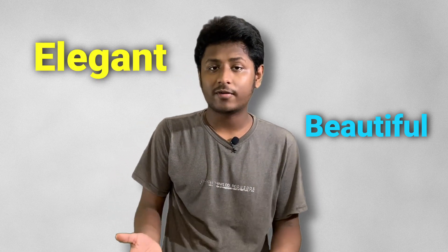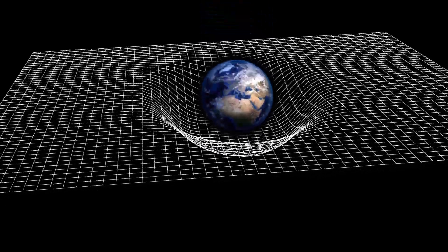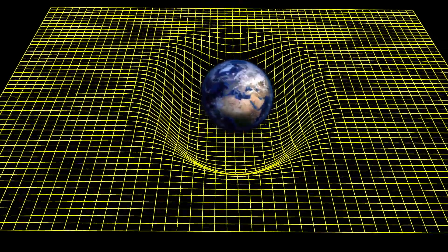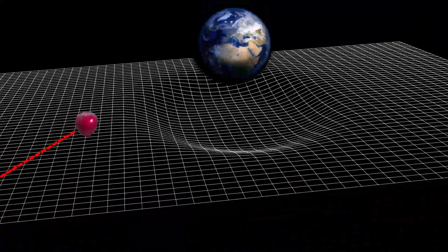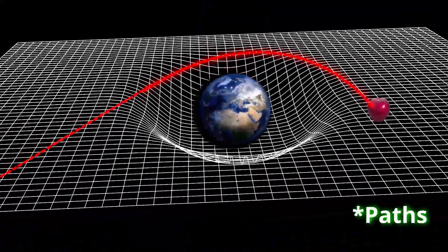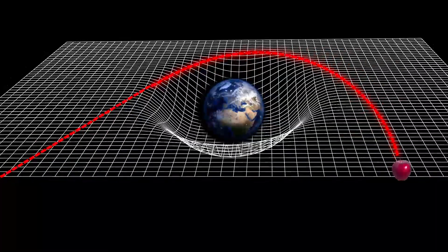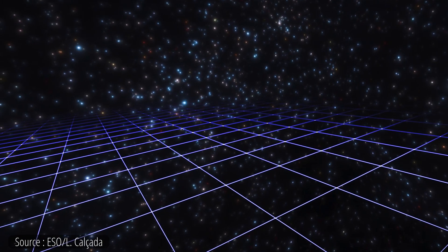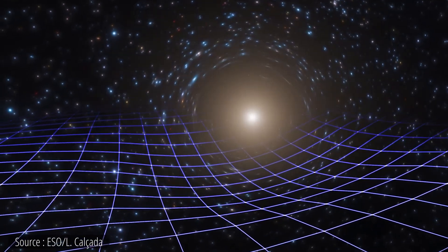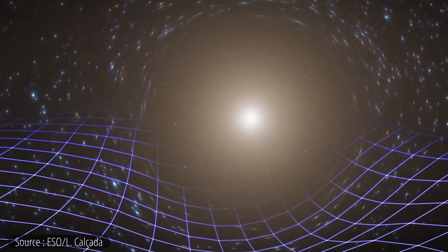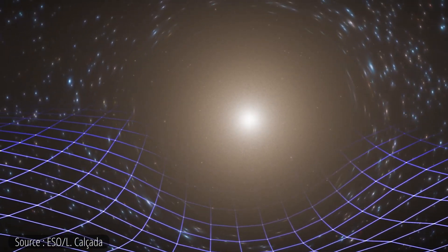General relativity is a truly elegant and beautiful way to model gravity. The most interesting thing about it is that it explains gravity not as a force but rather as an effect of the spacetime geometry. Essentially, what it says is that mass or energy warps spacetime, so when an object moves through this warped spacetime, its path appears to be curved — not because a force is acting on it, but because the spacetime it moves through is itself curved, giving us the illusion that a force is acting on the object.